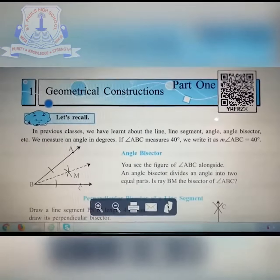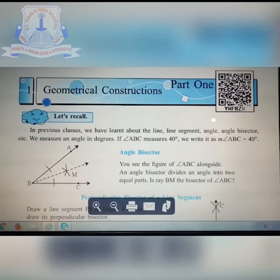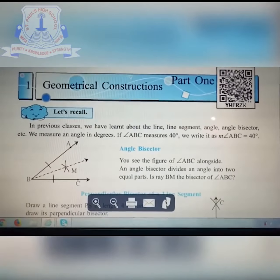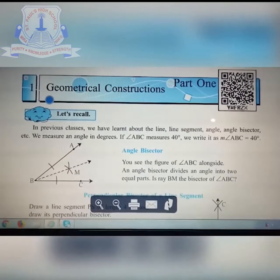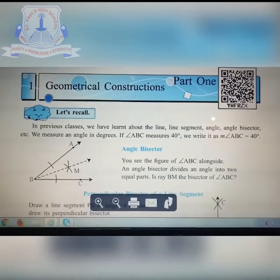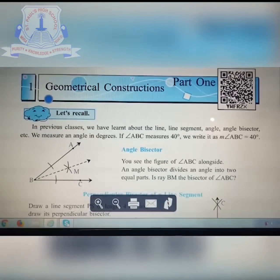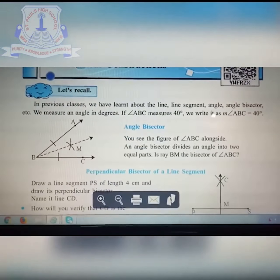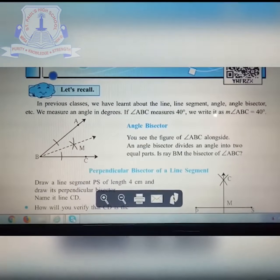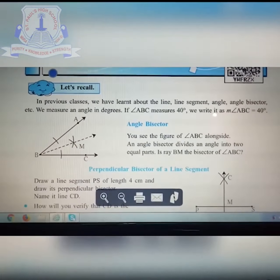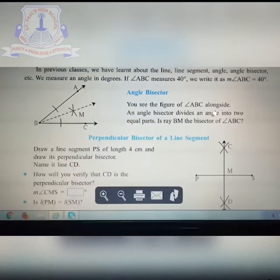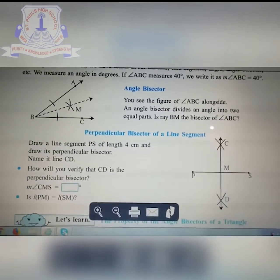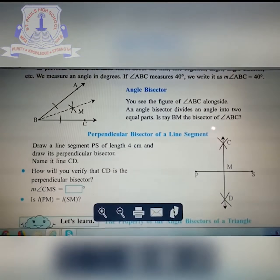The first part is given as a revision of what you have learned in your previous class, standard 6. It was about line, line segment, angle, angle bisector, how to measure the angle, how to write the measurement of the angle, and then the angle bisector. We will do a quick revision with the help of the figure.